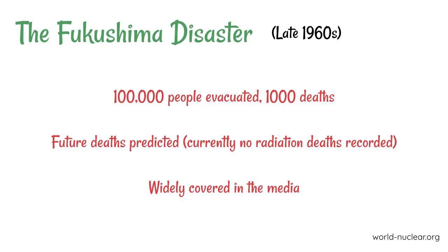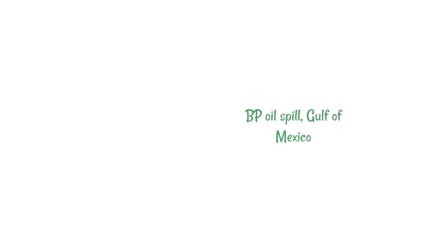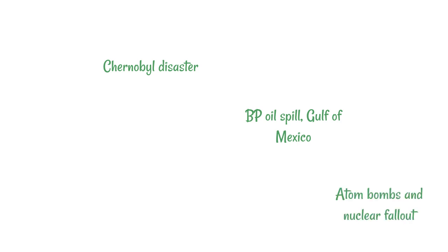This was a big disaster widely covered in the media, which means it got lots of attention and had the potential to influence many people. There are many other examples throughout history — relatively recently the BP oil spill in the Gulf of Mexico, the Chernobyl disaster which was another nuclear power plant incident, atom bomb testing and their use in Hiroshima and Nagasaki with associated nuclear fallout, and plastics on Midway Atoll as a result of plastic use and disposal, which has received reasonable media attention recently.